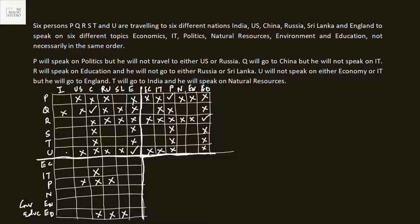U is going to England and is not speaking on economics. The England person is not speaking on economics, IT, politics, or education — so the one going to England is either speaking on natural resources or environment. T will go to India. P is going to Sri Lanka, S is going to Russia, and R is going to US. T is going to India and will speak on natural resource, so the Indian person speaks on natural resource.